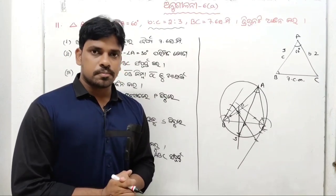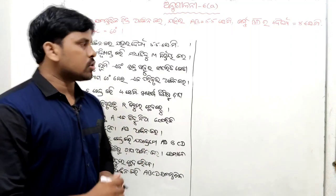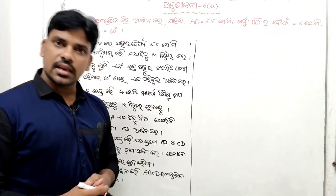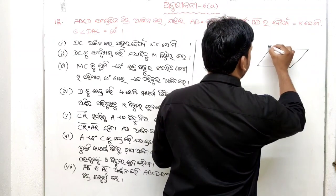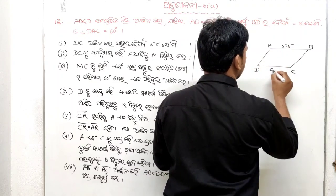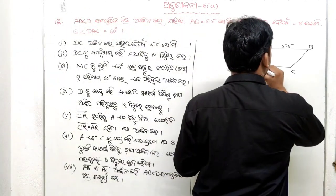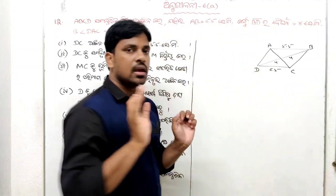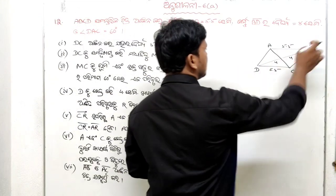So, we will start with the last number, number 12. ABCD is 5.5 and BD is 8 cm and DAC is 6 degrees. I am going to show you how to do this. ABCD is 5.5. It means that it is 4.4. I am going to show you how to do this.